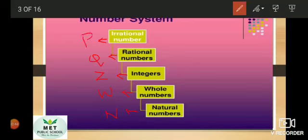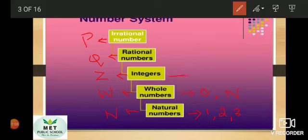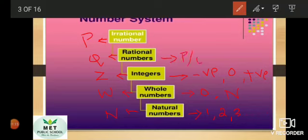Let us see in detail about each and every different type of number. Natural numbers are the numbers that begin from 1 and continue — all numbers 1, 2, 3 and so on up to infinity are natural numbers. Whole numbers include 0 and the natural numbers. Integers include negative numbers, 0, and positive numbers. Rational numbers are written in the form of p/q where q is not equal to 0. Irrational numbers are the numbers which cannot be written in the form of p/q.